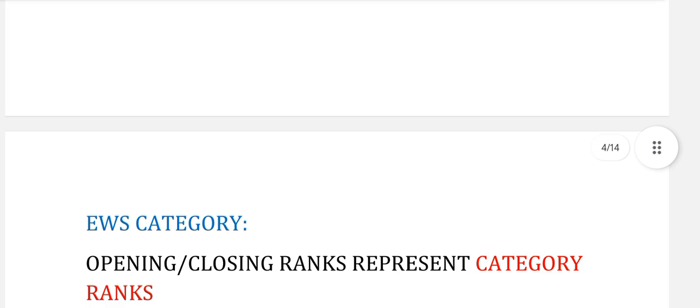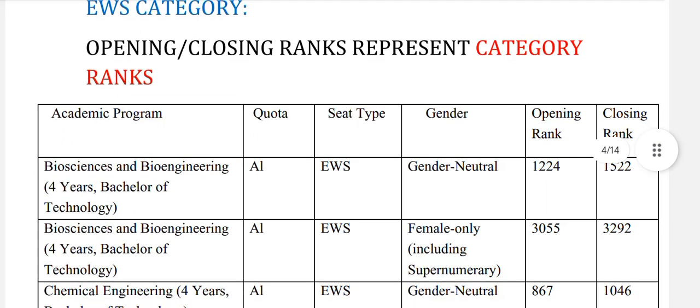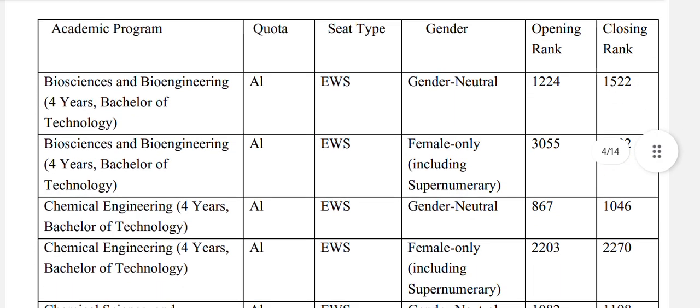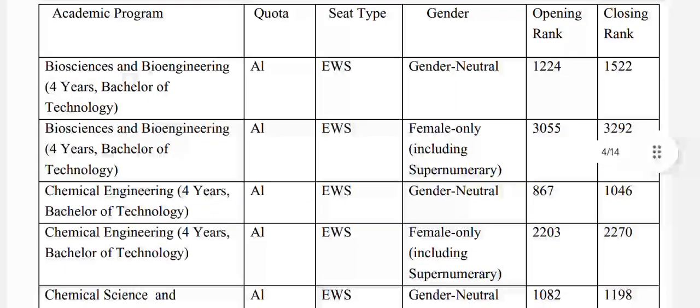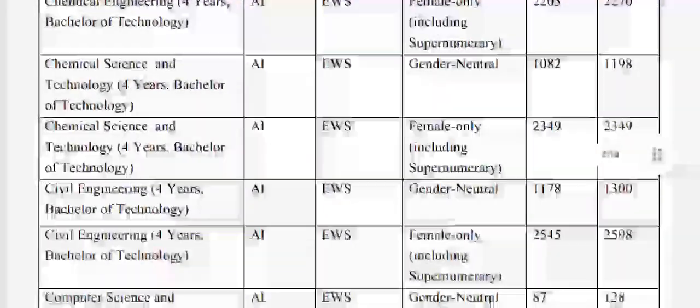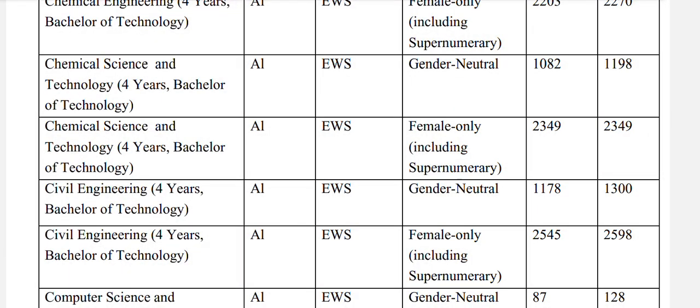Now let's see the data for EWS category. The opening and closing ranks represent your category rank. If you belong to any category, two ranks are allotted: one is CRL and one is your category rank. For Bioscience and Bioengineering, EWS gender-neutral: 1522. Chemical Engineering, EWS gender-neutral: 1046. Chemical Science and Technology, EWS gender-neutral: 1198, and for females: 2349. Civil Engineering, EWS gender-neutral: 1313, and for females: 2598.